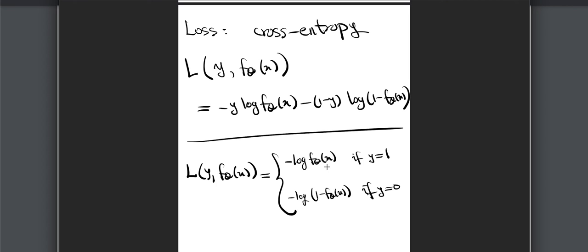If y is 1, the cost is minus log(f_theta(x)), and if y is 0, the cost is minus log(1 minus f_theta(x)). When y is 1, we want f_theta(x) as close as possible to 1. When f_theta(x) is close to 1, log(f_theta(x)) is close to zero, so the loss is near zero. But if f_theta(x) is close to zero, log of a number less than 1 is negative, and negative times negative gives a positive loss that increases as f_theta(x) gets closer to zero.